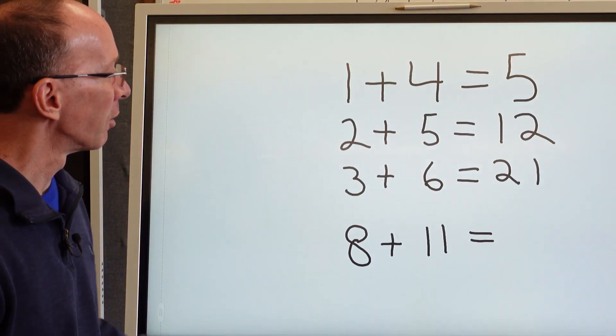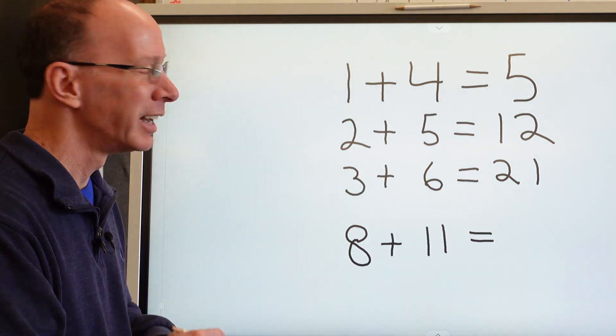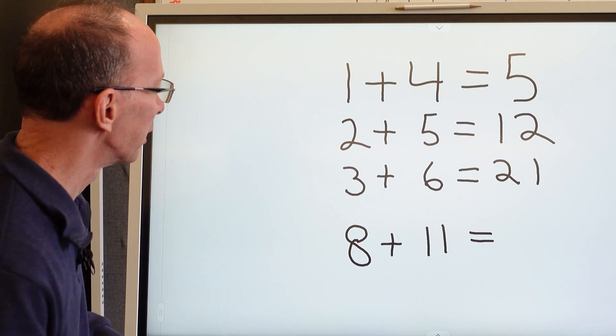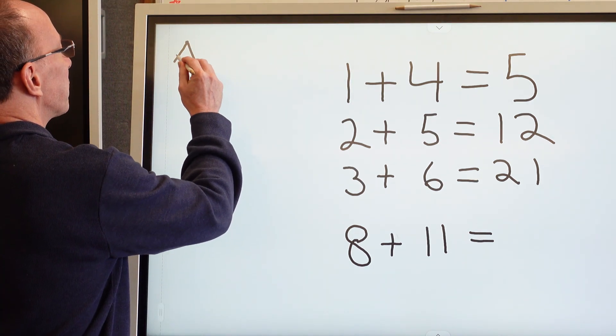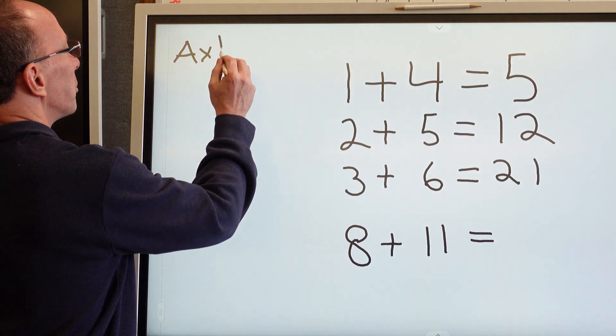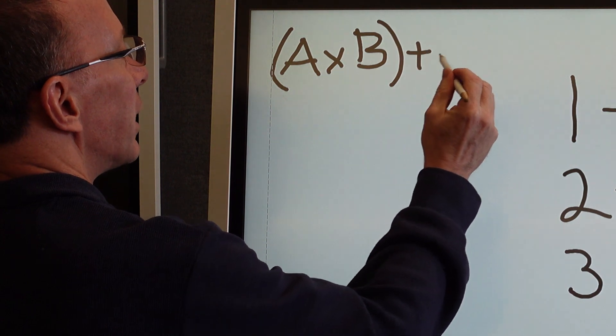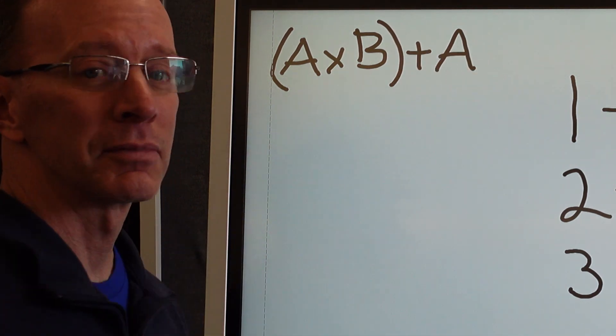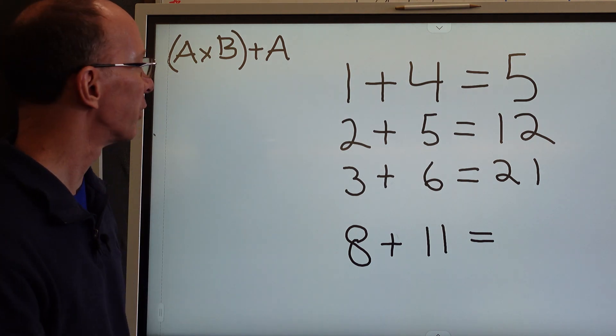So let's take a look at a different way. Same puzzle, but we're going to do this a little different. I'm going to use a secret formula. My formula is we're going to go A times B plus A. So this is A and this is B, and we're just going to plug it into this little secret formula here.